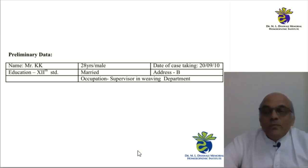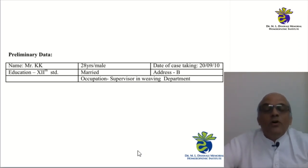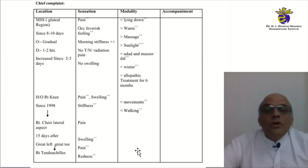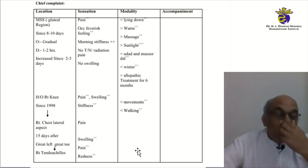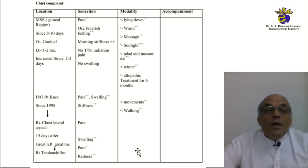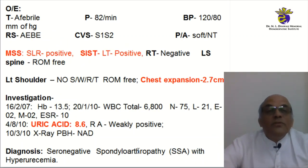We come to the second case. The reason for this case is to understand the relevance of another chapter of BBCR. This is a case of a 28-year-old man. The relevance here is not the case itself but the use of the tool when encountering this case. The case came up with complaints of back pain, morning stiffness, and a set of modalities: lying down, warmth, massage, sunlight, and aggravation in winter. When we investigated and examined this case, we found that this person was suffering from seronegative spondyloarthropathies with hyperuricemia — uric acid at 4.8-6 — and his ability to expand his chest was just 2.7 centimeters.